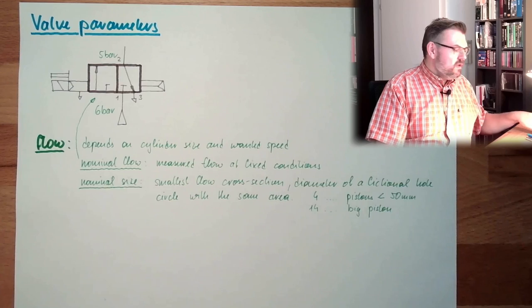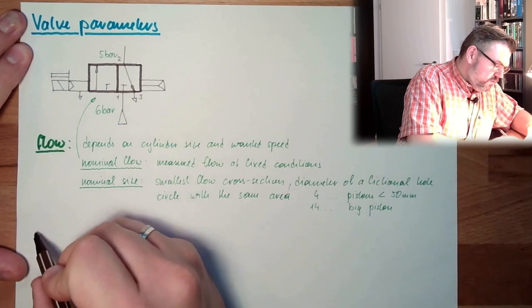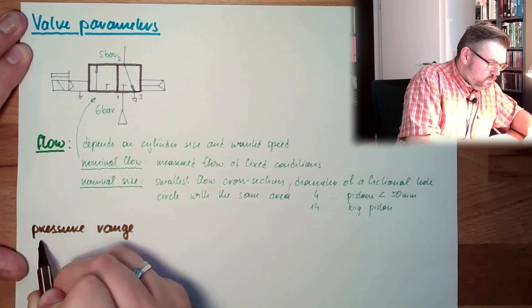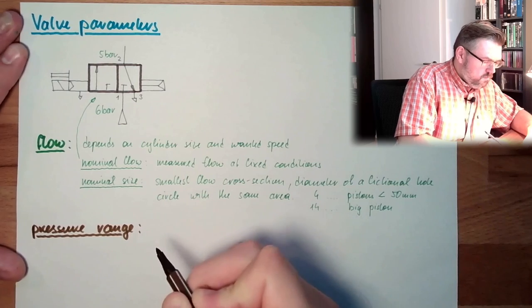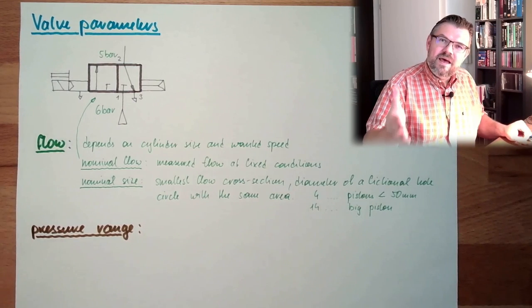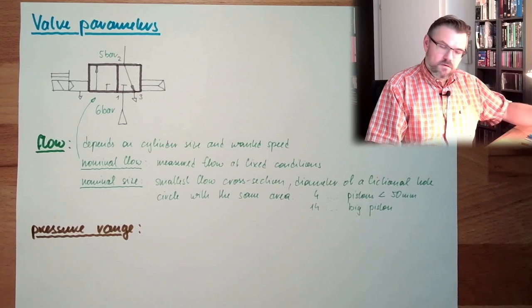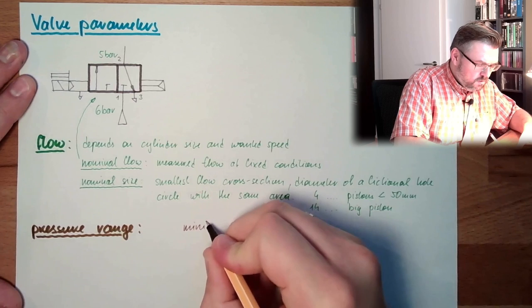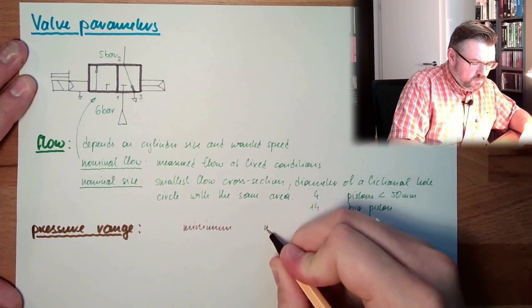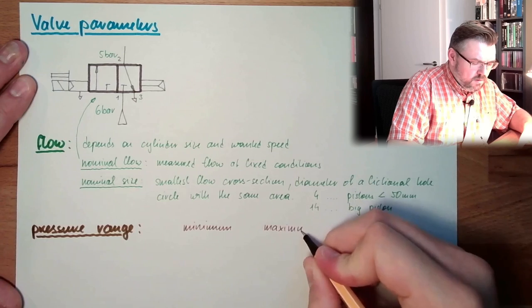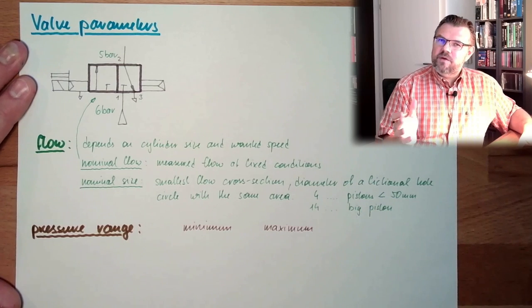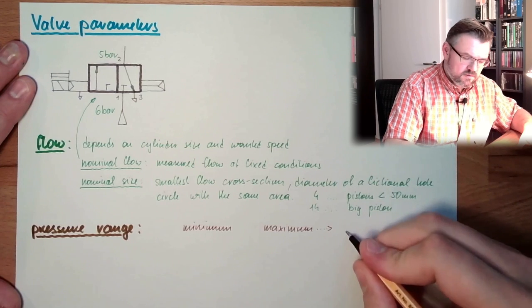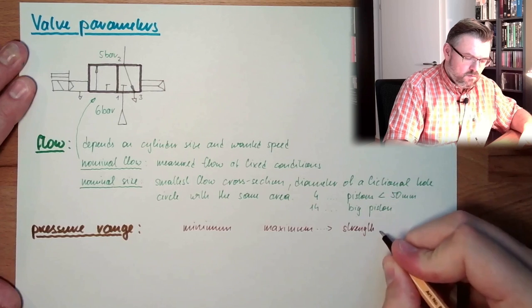And then another big topic is the pressure range. This also needs to fit. Usually, there's given a minimum and a maximum pressure. So there is a range. It's not zero. There's a minimum. And the maximum pressure, the maximum pressure is hopefully clear to everybody. This is because of strength, body strength, strength of valve body.